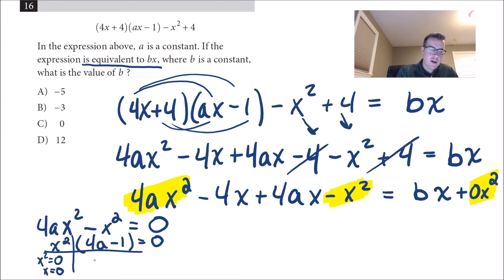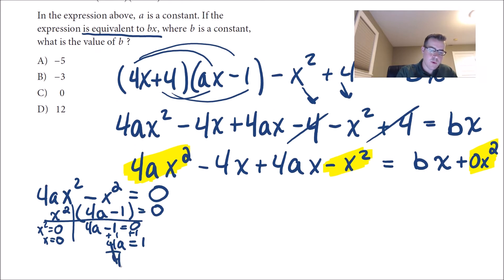Or if I set this equal to zero, 4a minus 1 equals zero, add the one over, we get 4a equals one, or a equals one fourth.